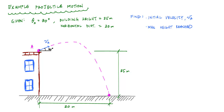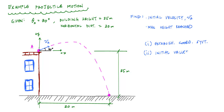The first thing we're going to do, as with any projectile motion problem, is establish a coordinate system. I'm going to use a conventional Cartesian coordinate system with x in the horizontal and positive y direction upwards. That's going to let me define some initial values — my initial position, my final position, and then breaking up my velocity vector into components.